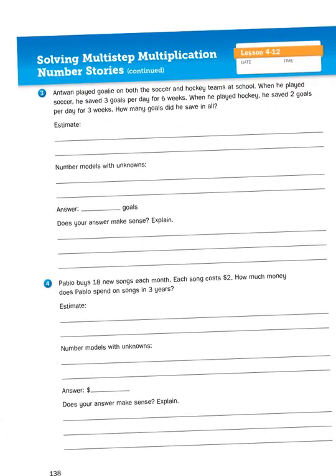Problem number three: Antoine played goalie on both the soccer and hockey teams. When he played soccer, he saved three goals per day for six weeks. When he played hockey, he saved two goals per day for three weeks. How many goals did he save in all? You'd have to figure out the total goals in hockey and the total goals in soccer and then add them up. Number four: Pablo buys 18 new songs each month. Each song costs two dollars. How much money does Pablo spend on songs in three years? So it's 18 songs times two dollars times the number of months there are in three years. Multiple steps.